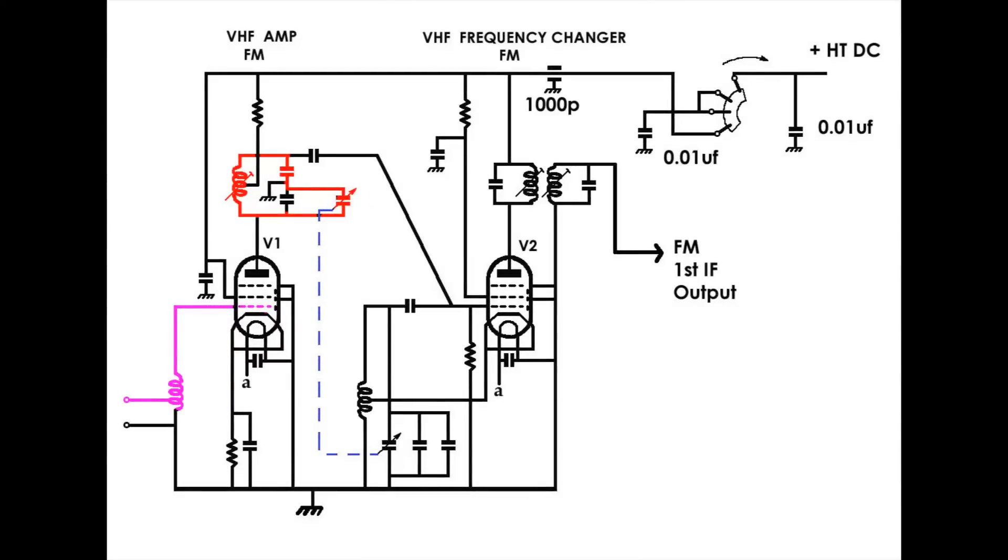The series capacitor passes RF signals but it blocks the HT DC from being grounded. The coil is fed in the middle of the winding and this has the effect of giving a bigger voltage swing to the tank circuit.